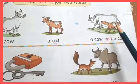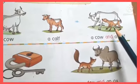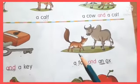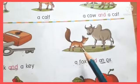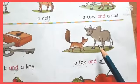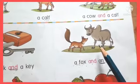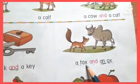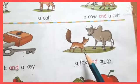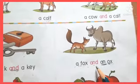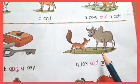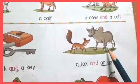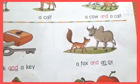Ek gai or ek bachhra. Here, see: a fox and an ox. A fox — ek lomri. An ox — ek bel.